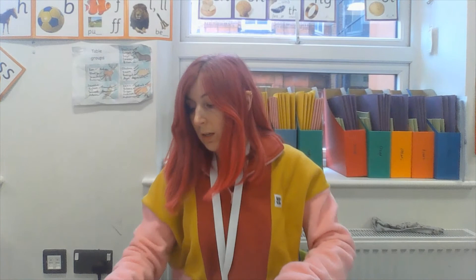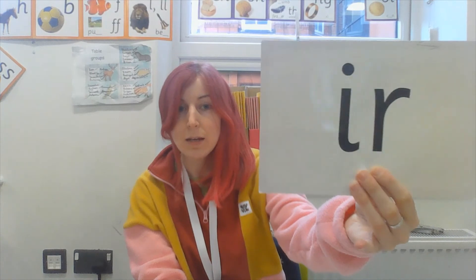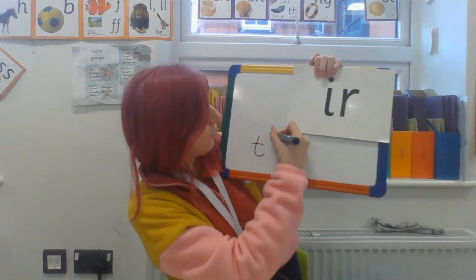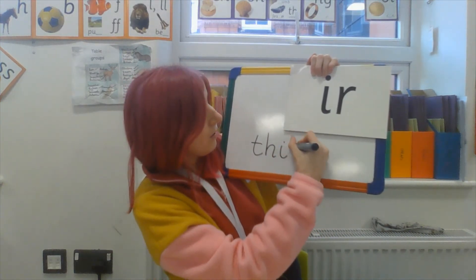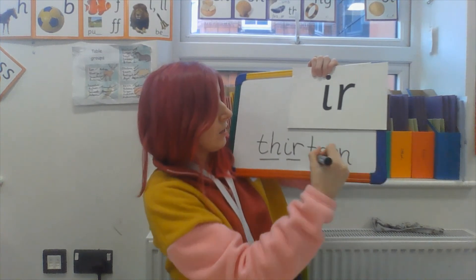For our final word today we're going to do a two-syllable word. You know all of the sounds you need for it. It's the word 'thirteen'. Thirteen - first syllable: th-ir - thur. Second syllable: T-E-N - teen. Thirteen. Remember when we're writing a big word we write the first syllable first and then the second syllable. Pause the video and restart when you're ready. Sound out: th-ir - thur - T-E-N - teen - thirteen.